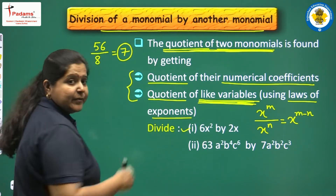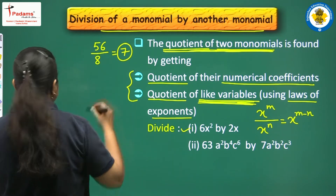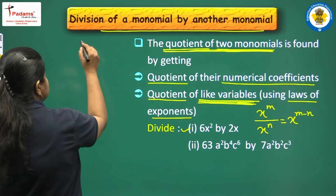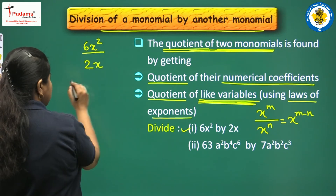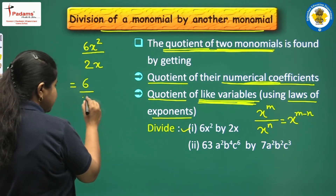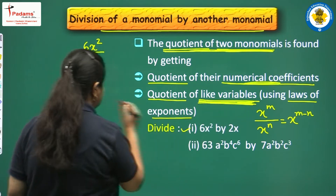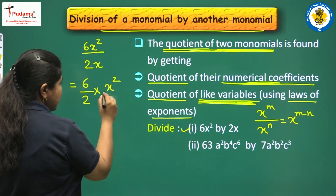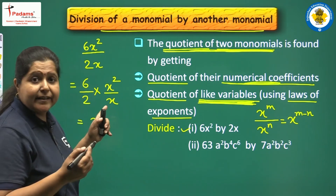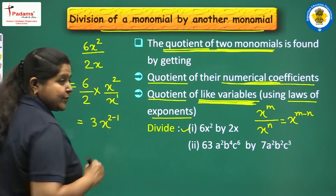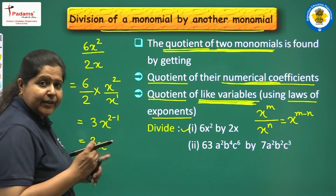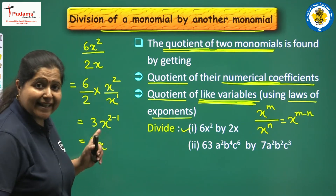We take the example of dividing two monomials: 6x² by 2x. Here we divide the numerical coefficients — 6 and 2. We divide them and we divide the like variables: x² upon x. Now, 6 by 2 is 3. And x² upon x: subtract the exponents, it will be x raised to power 2 minus 1, which is x. So the answer is 3x.